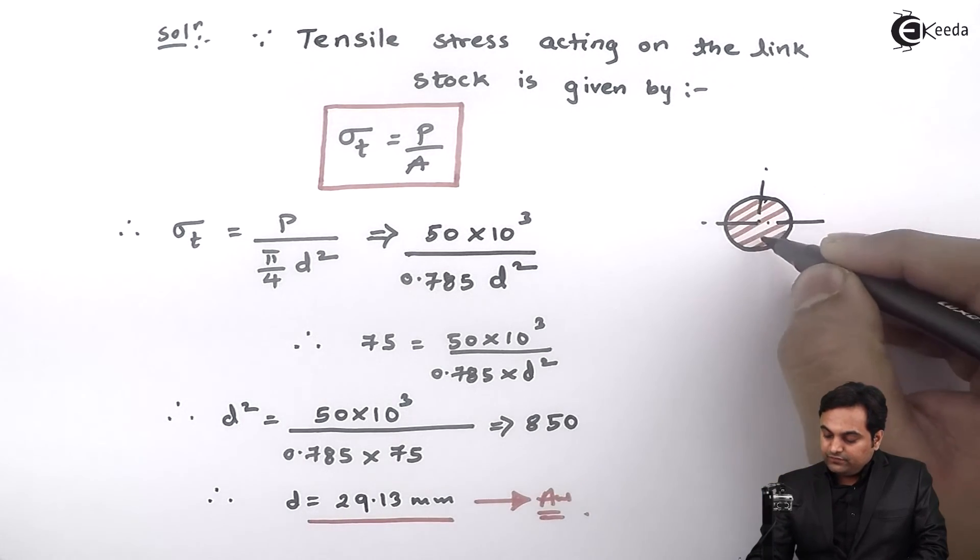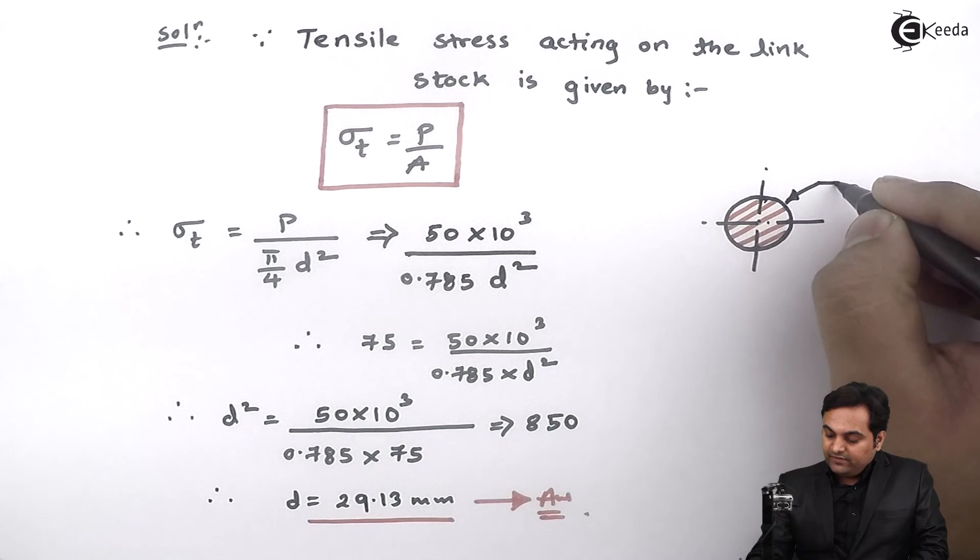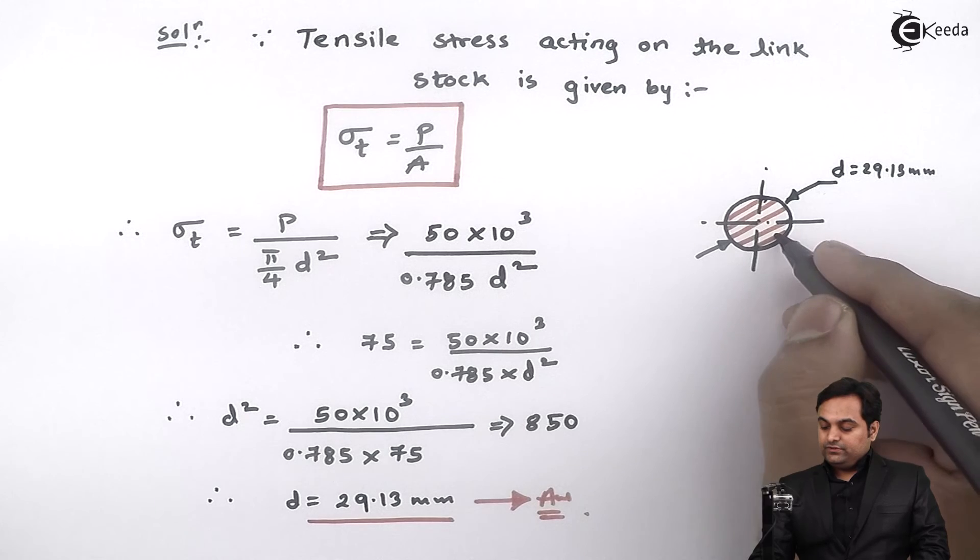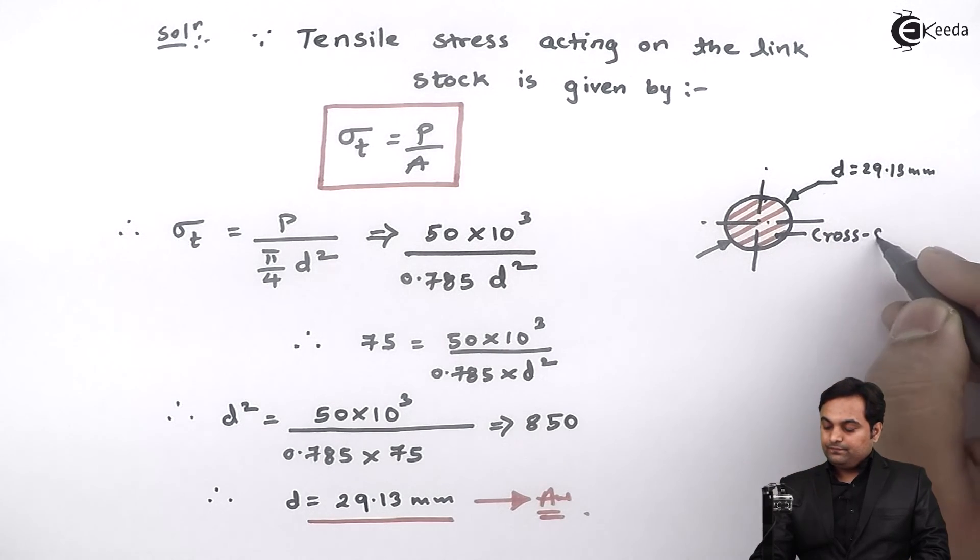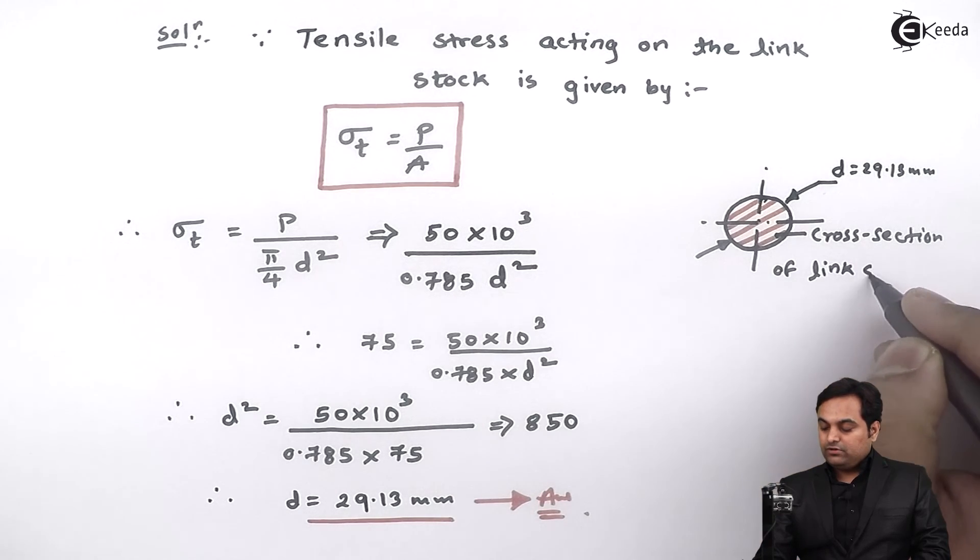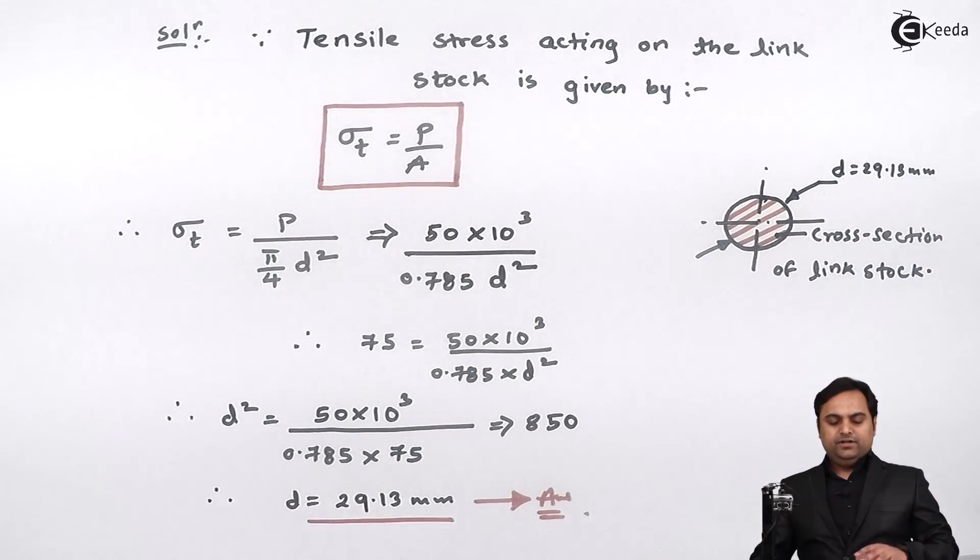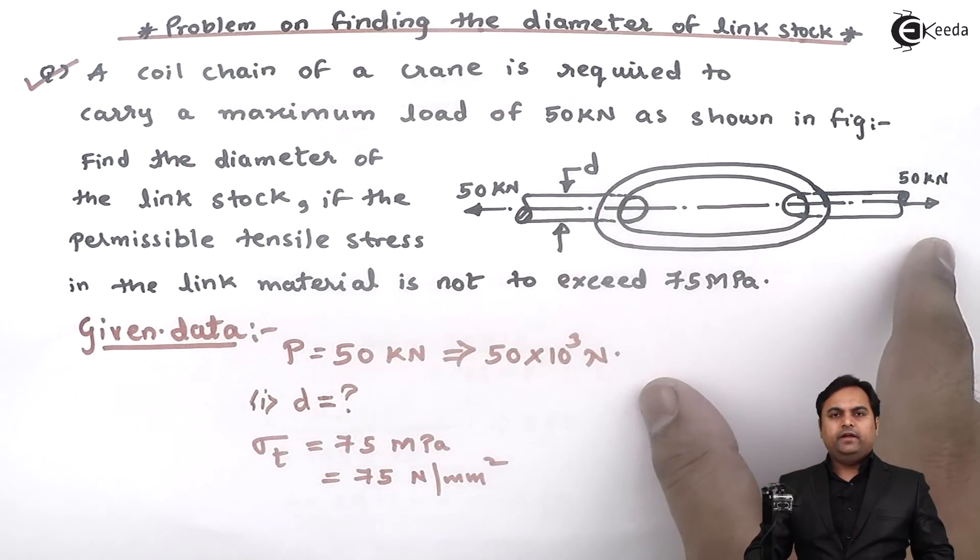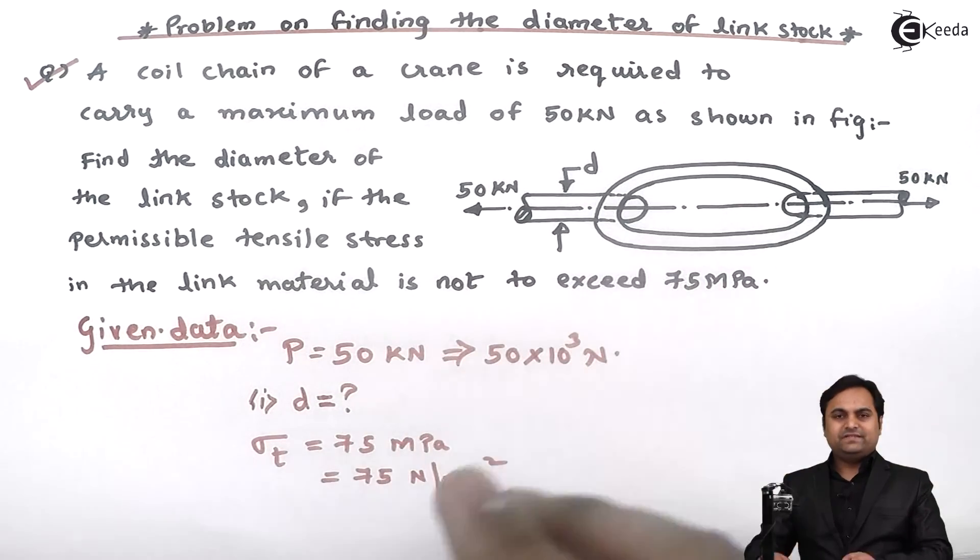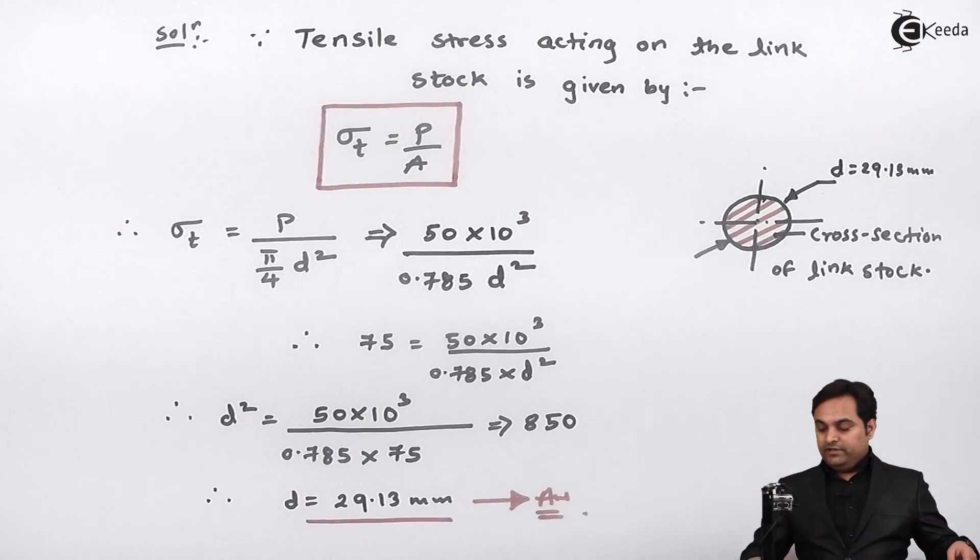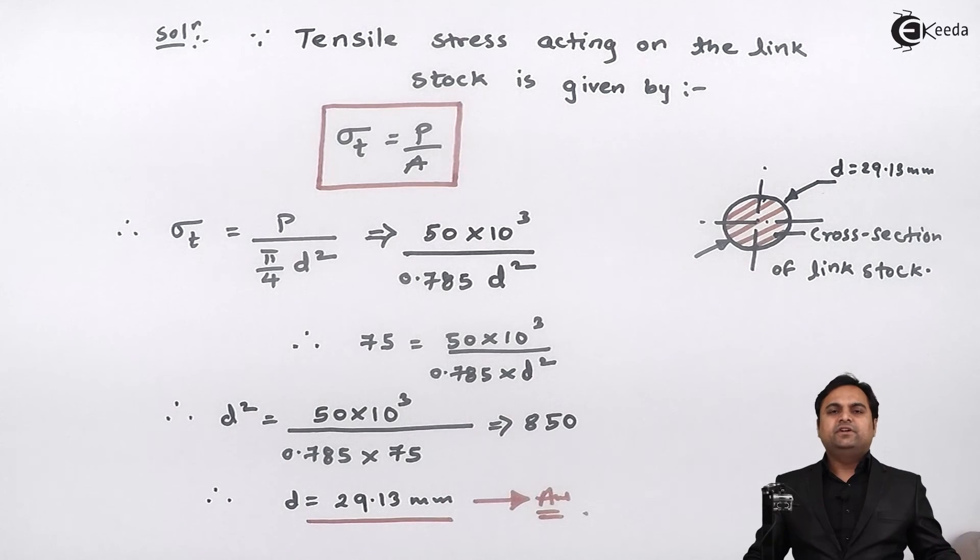This is the cross section of the link stock with diameter d = 29.13 mm. When the load of 50 kN is applied and that load is tensile, the diameter of this stock should be 29.13 mm. With this we complete the question.